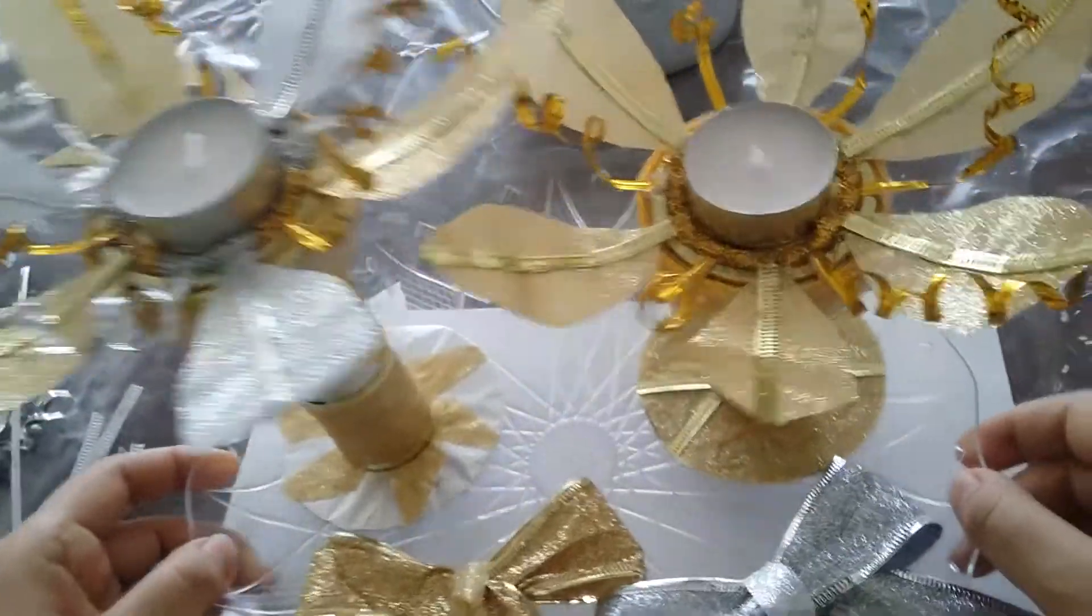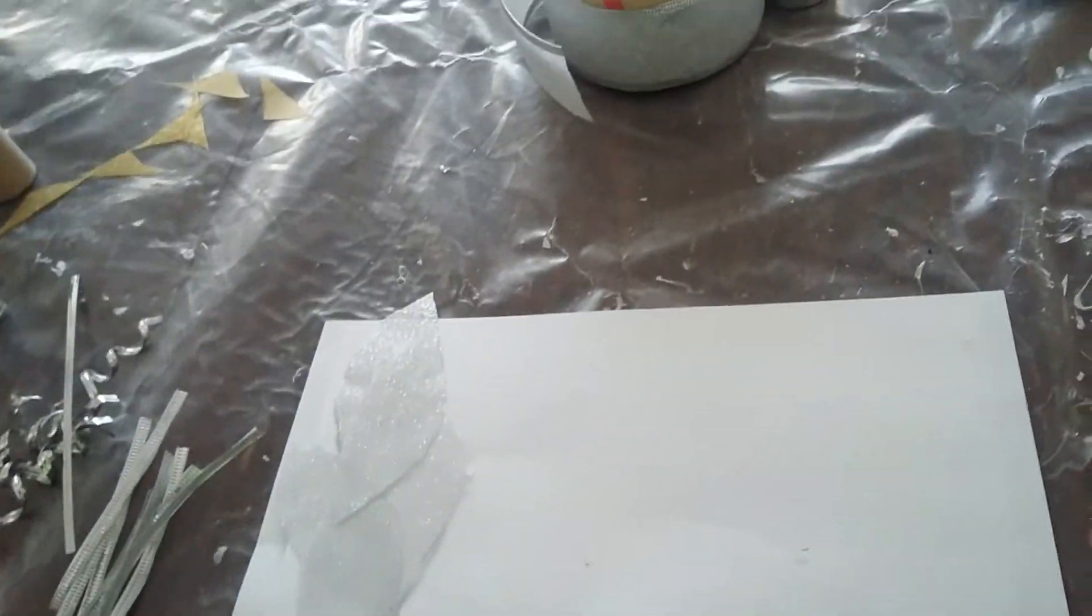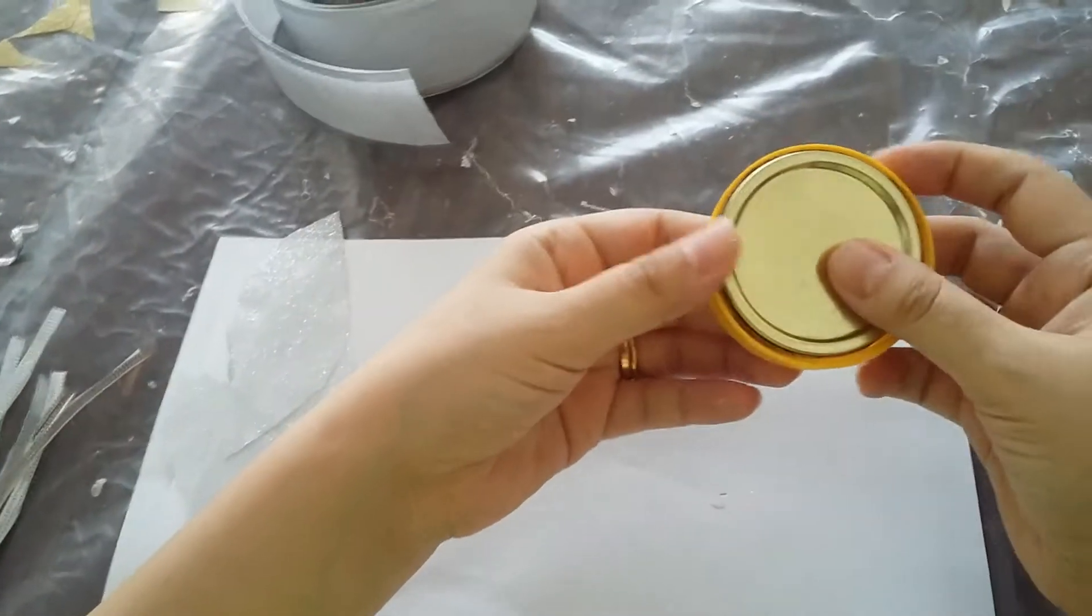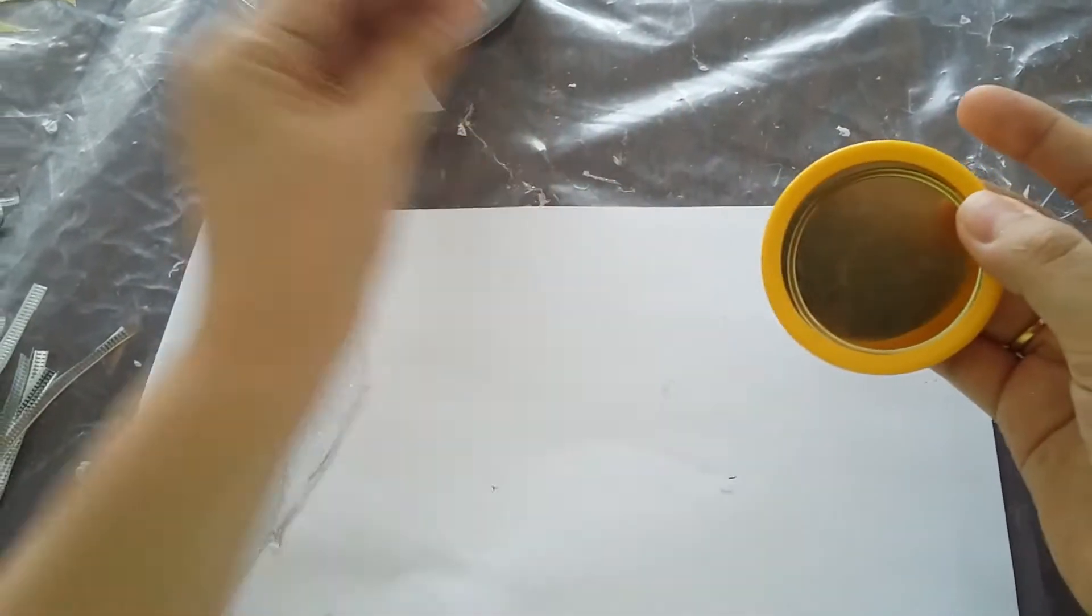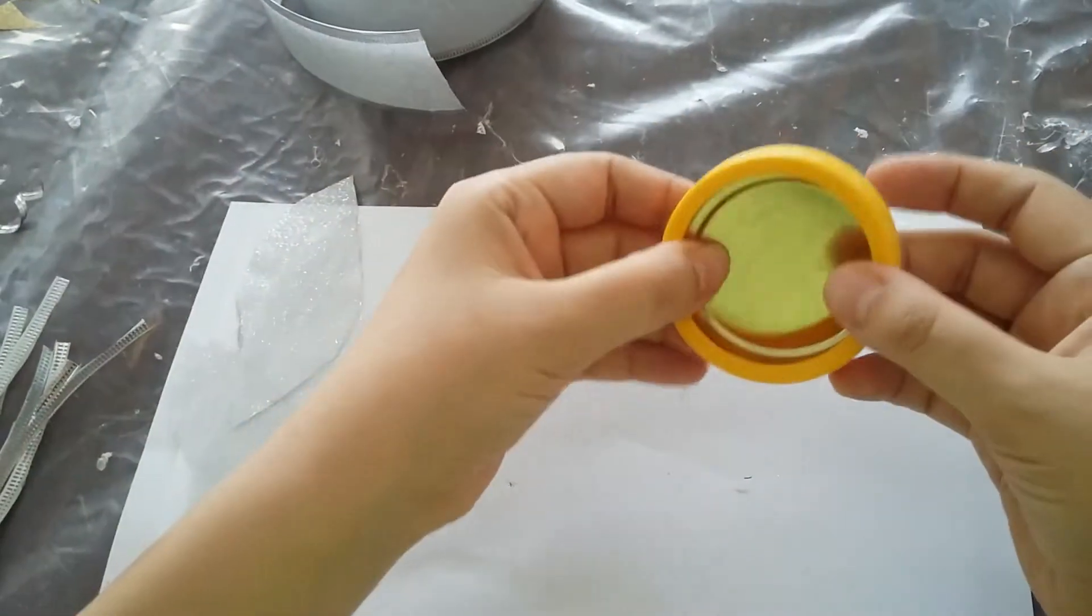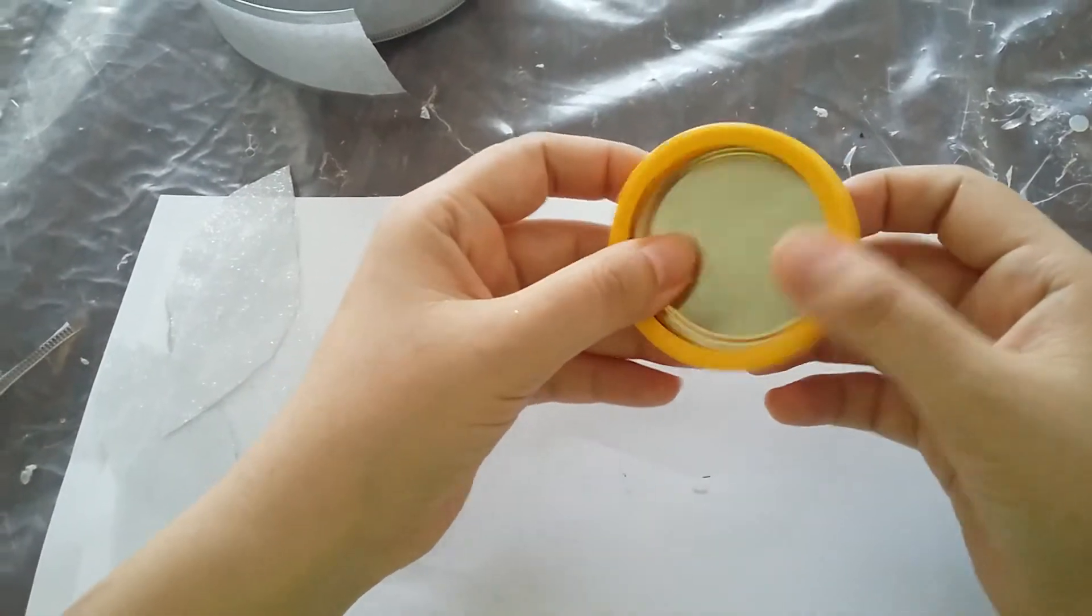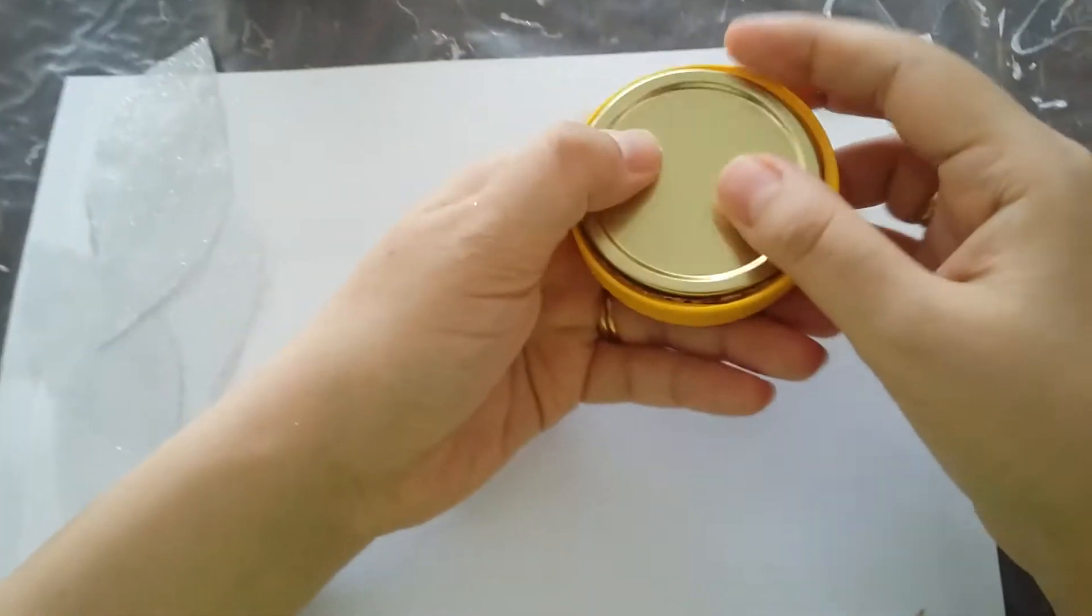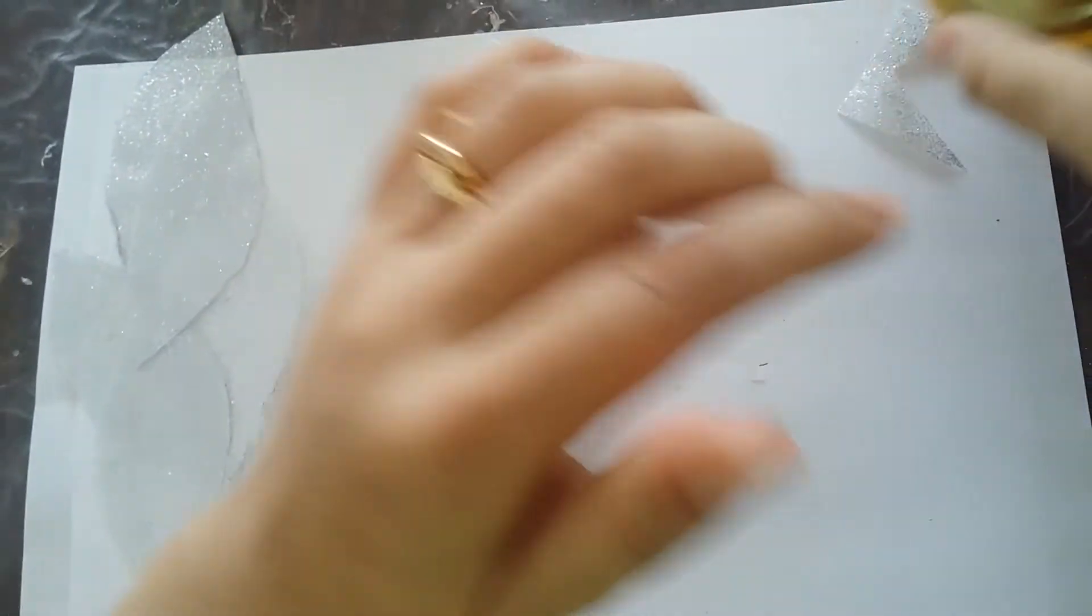So let's start. I will use this ribbon, this silver ribbon and I will bring this, you know, the natural sauce. This is a cover. So I will use it and I will just remove it like this and put it like this in case that I will stick it here.